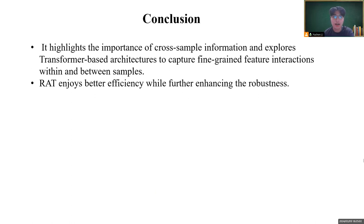In this paper, it highlights the importance of cross-sample information and explores transformer-based architectures to capture fine-grained feature interactions within and between samples. RAT enjoys better efficiency while further enhancing the robustness. That's all. Thanks for listening.